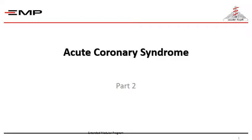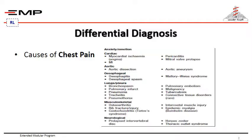Acute coronary syndrome part 2. The differential diagnosis of acute coronary syndrome includes multiple causes of chest pain. This slide contains a list of potential causes including cardiac, aortic, esophageal, lung, pleura, musculoskeletal, and neurological causes of chest pain.